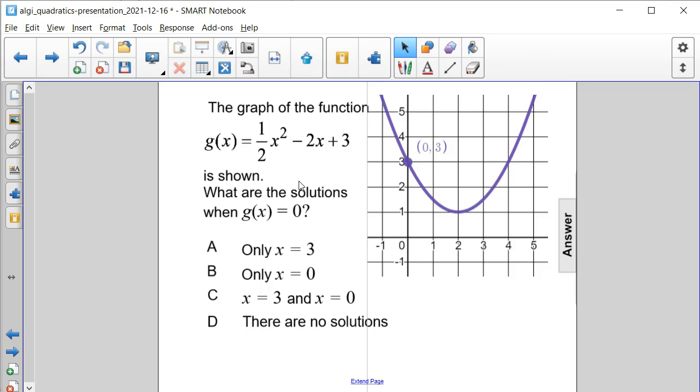The graph of the function g(x) = 1/2 x² - 2x + 3 is shown. What are the solutions when g(x) = 0?